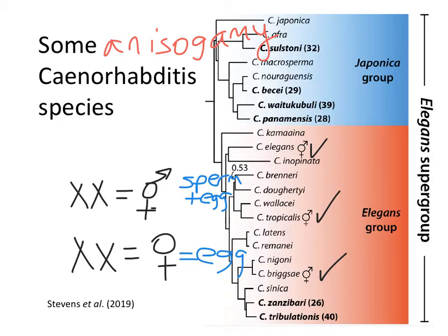A famous example of sequential hermaphroditism: clownfish are sequential hermaphrodites. They start off as males and then at some point in life they can transition to become females. All clownfish start life as males. There's likely no genetic component of sex determination in clownfish — it doesn't have anything to do with chromosomes; it has to do with something about the population. Every fish is born male, and the largest male is the breeding male — the only one that's reproductively mature, producing sperm and fertilizing female eggs.